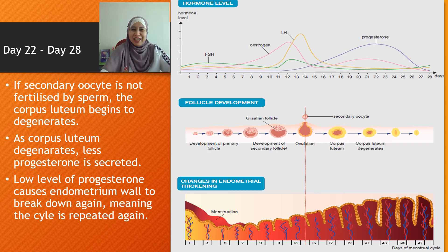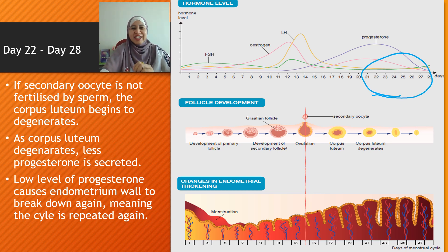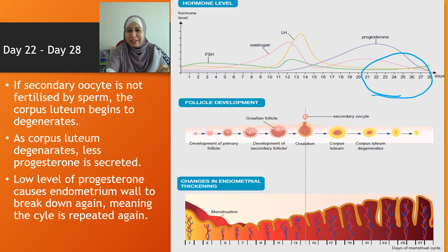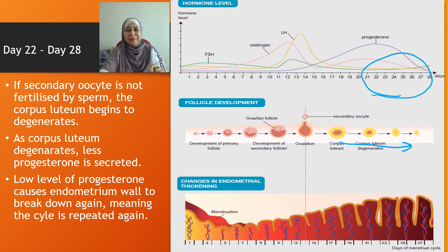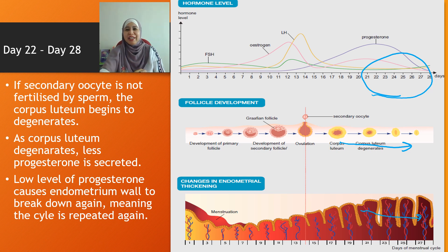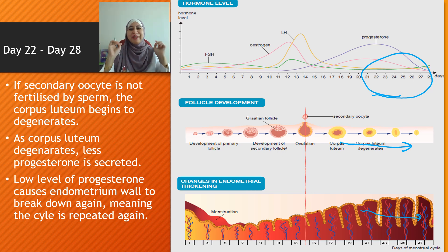From day 22 to day 28, if the secondary oocyte is not fertilized, the corpus luteum degenerates and dies. As the corpus luteum degenerates, the level of progesterone falls, because progesterone is secreted by the corpus luteum. The low level of progesterone causes the endometrium wall to break down again, menstruation occurs again, and the cycle repeats. Overall, the cycle normally happens within 28 days.